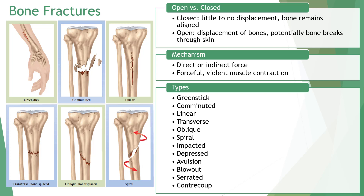Bone fractures occur when Wolff's law fails. Fractures are classified as either closed or open. Closed fractures involve little movement or displacement, while open fractures involve displacement of the fractured ends breaking through surrounding tissue. Common classifications include: greenstick or incomplete break; comminuted with four or more fragments; linear, where the bone splits along its length; transverse or non-displaced, a straight line perpendicular to the shaft; oblique non-displaced, a diagonal cracking along the shaft; and spiral, with S-shaped separation.